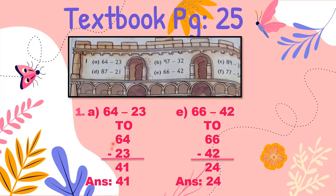Up to 6, the answer is 4 in my T column. Moving to number E, same method: start counting after 2 up to 6, the answer is 4 in my O column. Then start counting after 4 up to 6, the answer is 2 in my T column. The answer is 24.